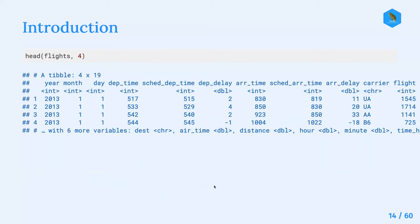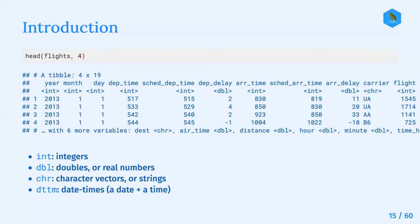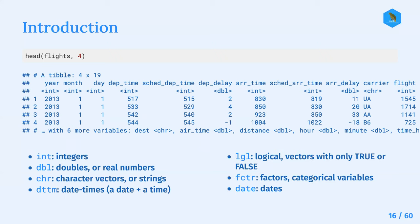One thing to point out is the row underneath the variable names, which shows the class of that variable. There could be integers, doubles or real numbers, character vectors or strings, and date-times. Other datasets may have additional classes like logical, factors, and just dates.